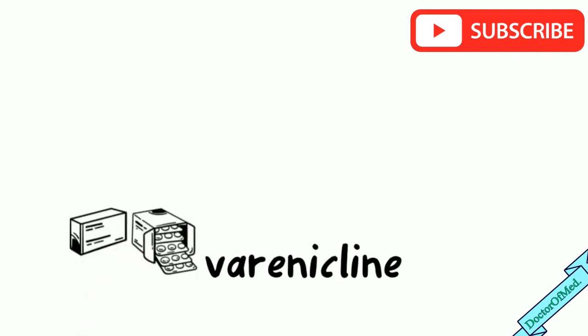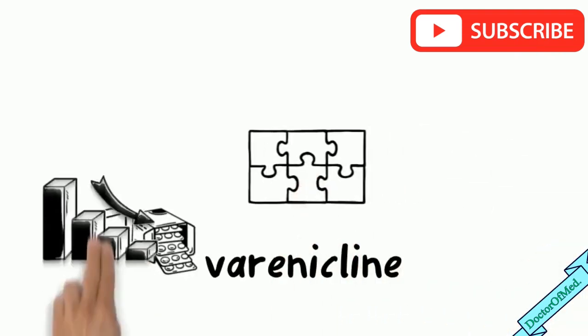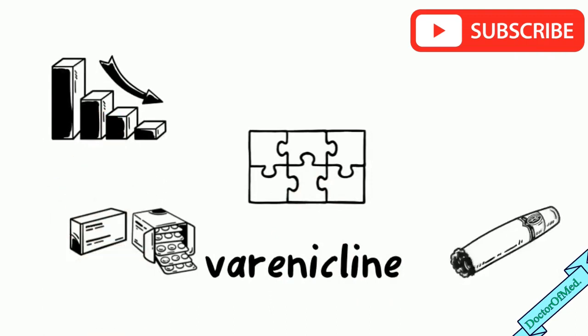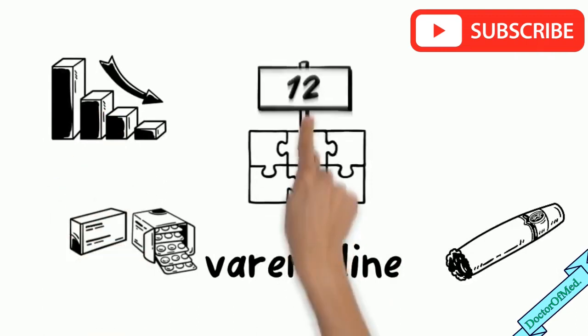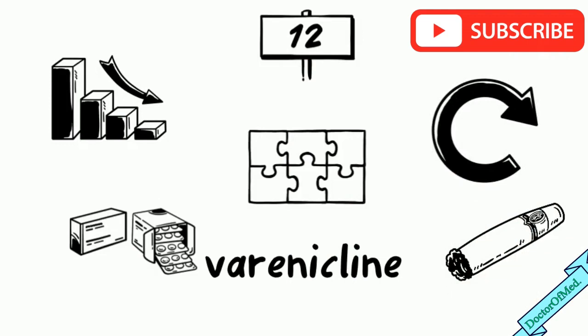Another drug is varenicline which interferes with nicotine receptors, which results in the reduction of the pleasure you get from having nicotine. Varenicline is used for 12 weeks, but if you have successfully kicked the habit, then you can use the drug for another 12 weeks to reduce smoking relapse risk.